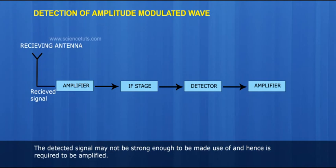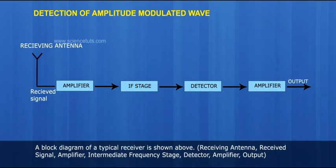The detected signal may not be strong enough to be made use of and hence is required to be amplified. A block diagram of a typical receiver is shown above.